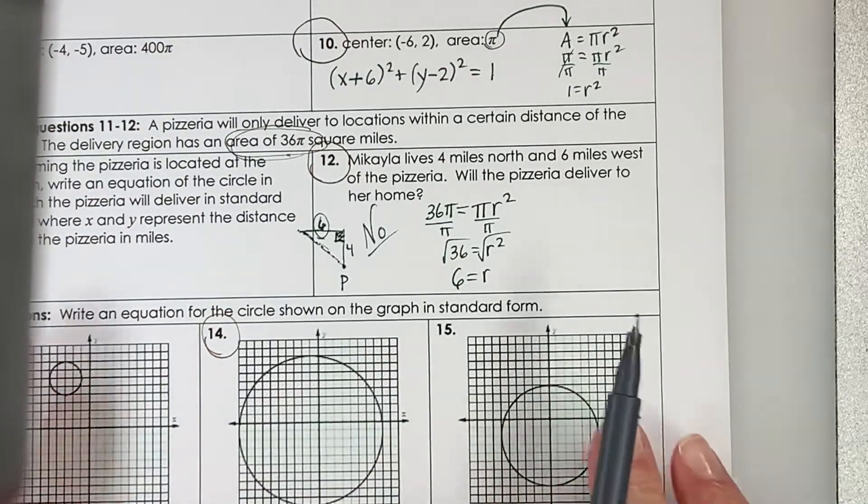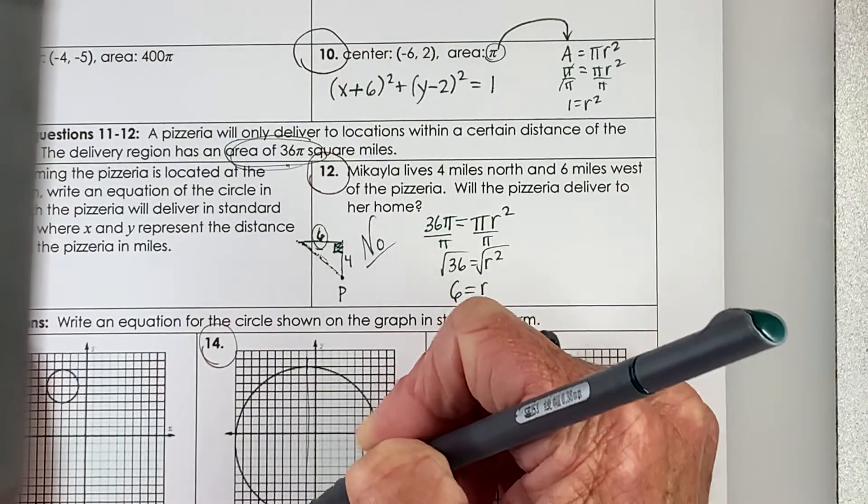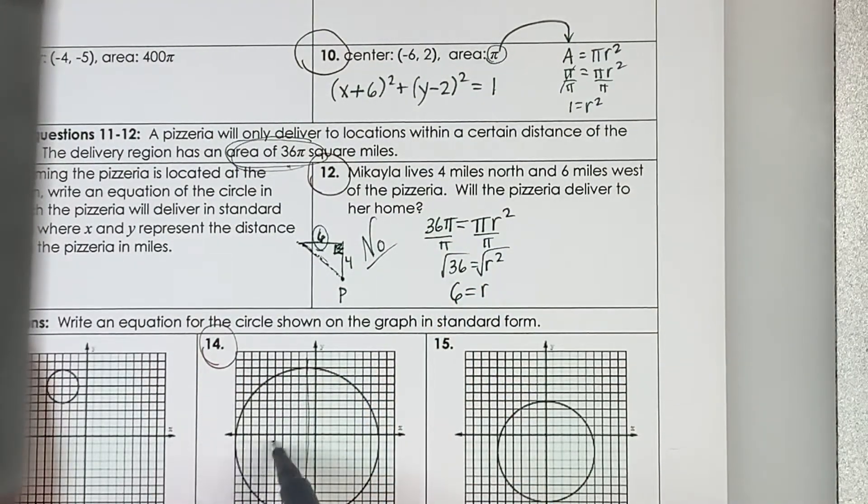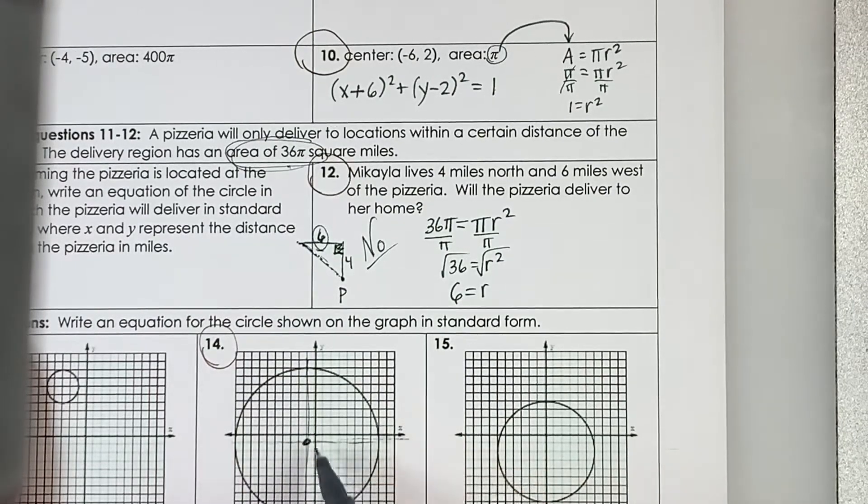And then given a graph, can we write the equation? All right, so we need to find the center. This seems to be a diameter, and I'm thinking that's a diameter. A little hard to see. I think this is the center, but I need to count.